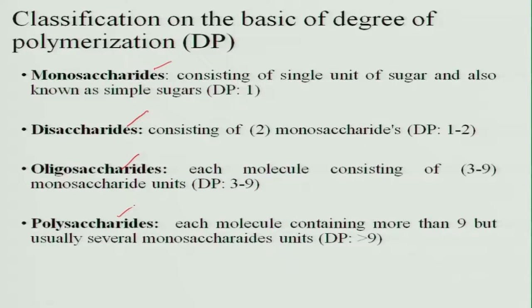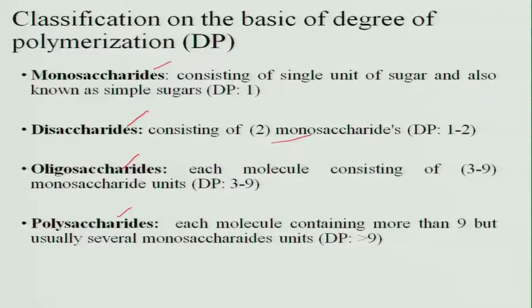Monosaccharides consist of a single unit of sugar and are also known as simple sugars. The degree of polymerization is 1 and they cannot be further hydrolyzed. Disaccharides consist of 2 monosaccharide units with a degree of polymerization of 1 to 2. Oligosaccharides have a polymerization of 3 to 9, yielding multiple monosaccharide units upon hydrolysis. Polysaccharides contain more than 9 degrees of polymerization and yield several monosaccharide molecules.